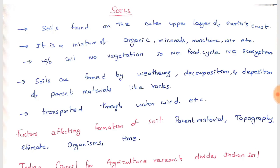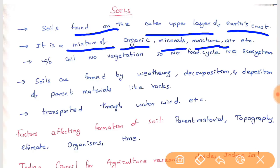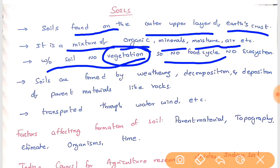Soils are found on the upper layers of the earth's crust, that is on the surface of the earth to some depth. This soil is a mixture of organic matter, minerals, and moisture with air. Without soil, there will be no vegetation — plants cannot grow without soil. If there is no vegetation, there will be no food cycle, and if there is no food cycle, there will be no ecosystem at all, and no chance of survival for man or animals. So soil plays a very crucial role in our ecosystem.